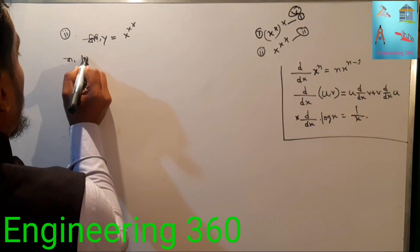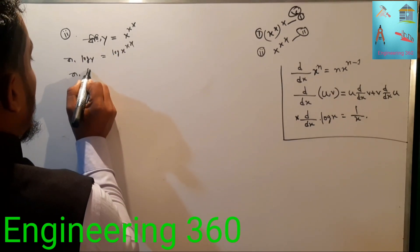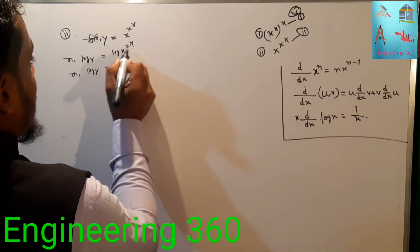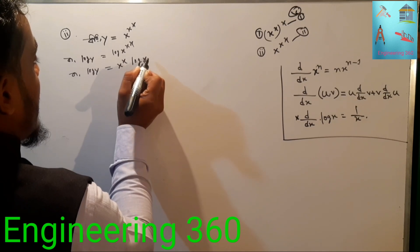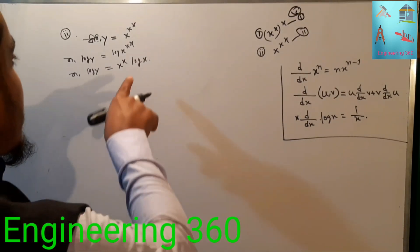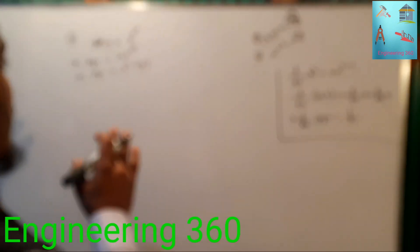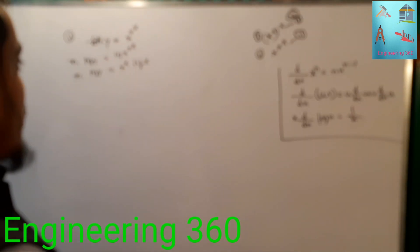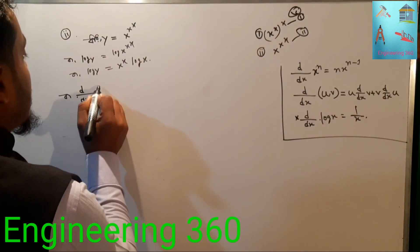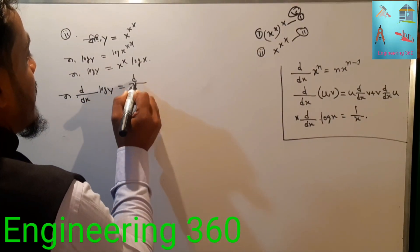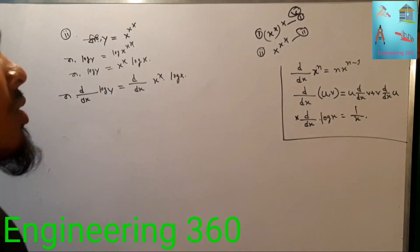For y equals x to the power x to the power x, taking log: log y equals x to the power x times log x. Now we differentiate both sides. d/dx of log y equals d/dx of x to the power x times log x.